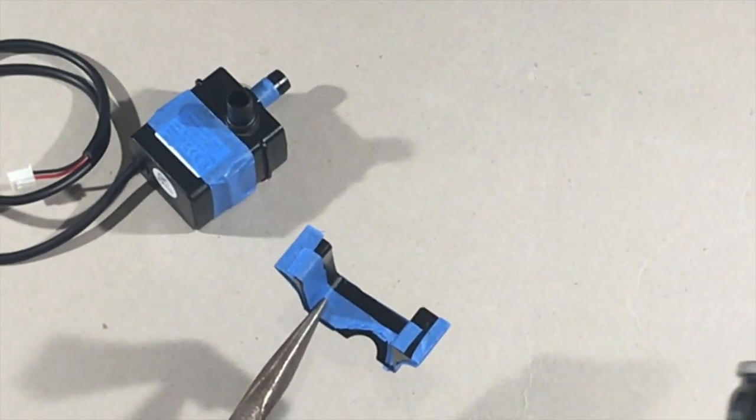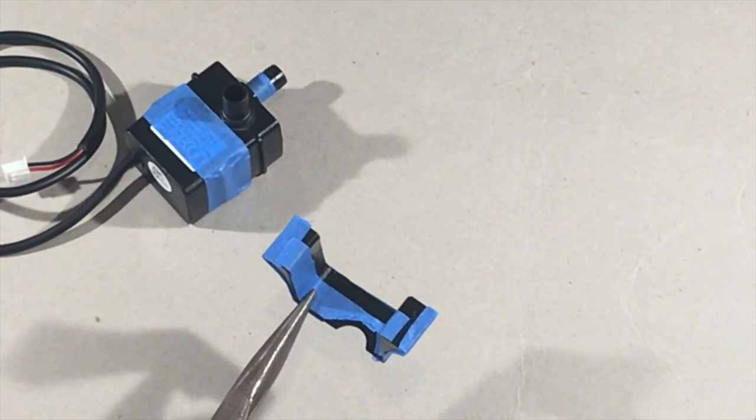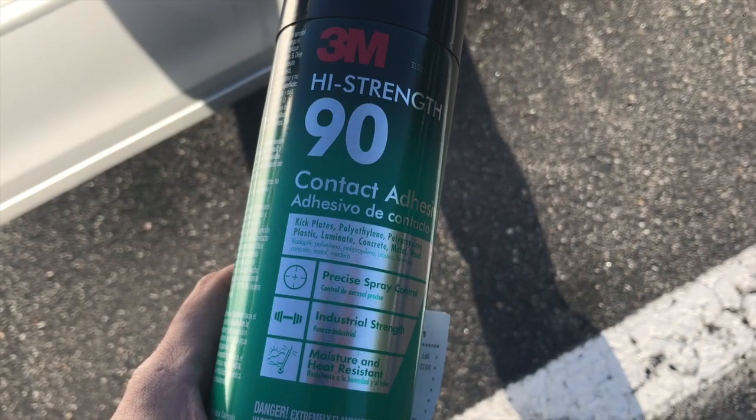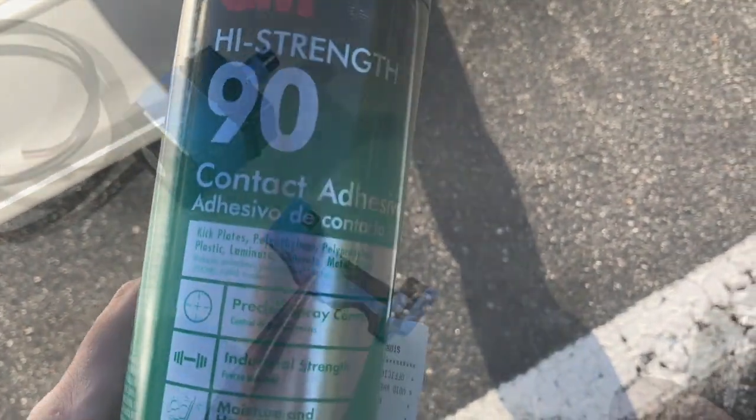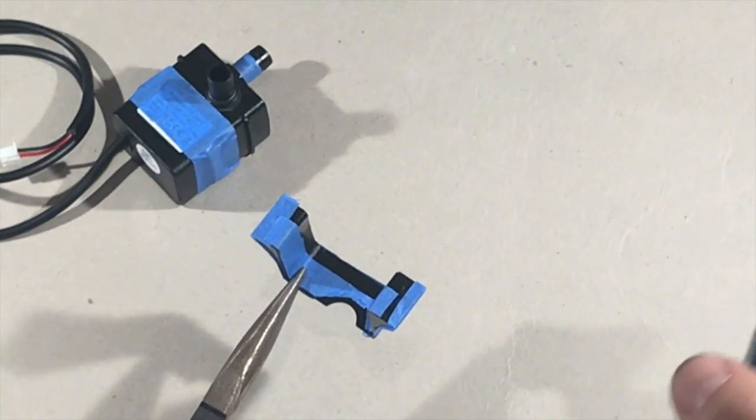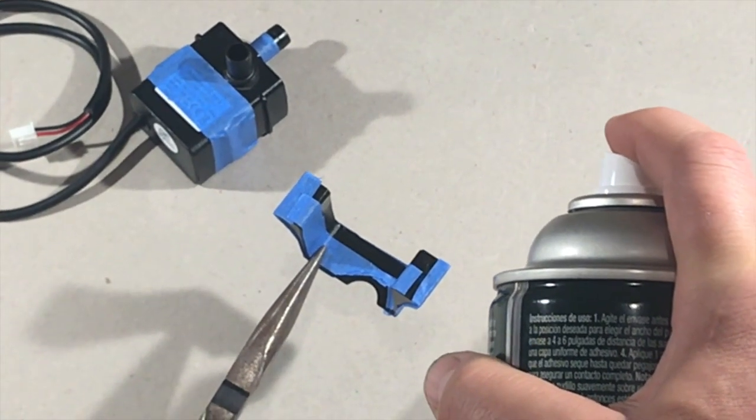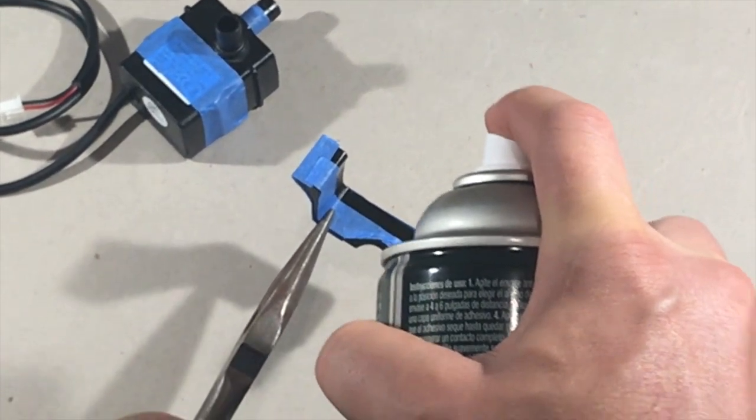We've covered the pump and the retaining clip with painters tape where we don't want to get contact adhesive. This is the contact adhesive you use. It's a 3M90 contact adhesive. It's going to bond the polypropylene together. So let's go and apply it.